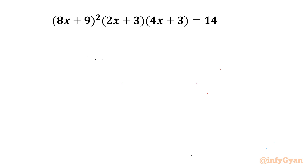Welcome back to Infigyan, my dear friends. In this video we have one very interesting question from quartic equations. Our equation is (8x + 9)² times (2x + 3) times (4x + 3) equal to 14, and we have to find out all possible 4 solutions.